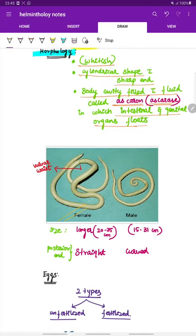This is a female worm and this is the male roundworm. The female is longer than male, 20-35 cm whereas the male is 15-31 cm in size. The difference between male and female is that the posterior end of the female worm is straight whereas the posterior end of the male worm is curved. This is the posterior end which is curved in male worm.